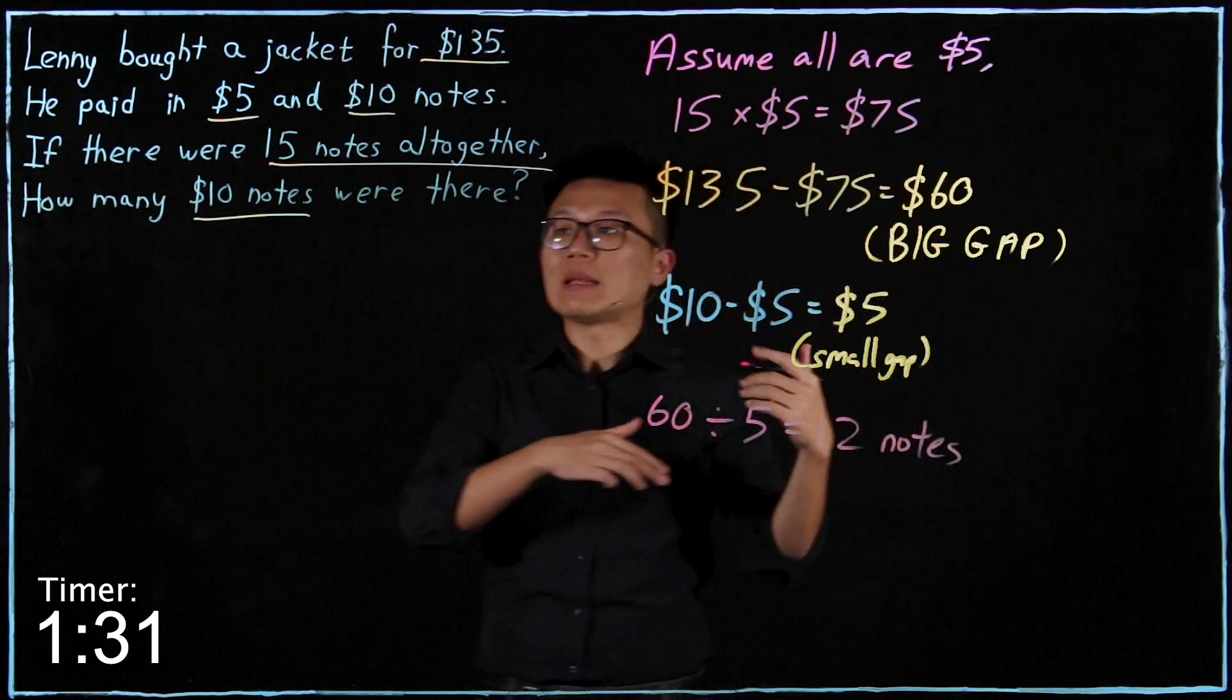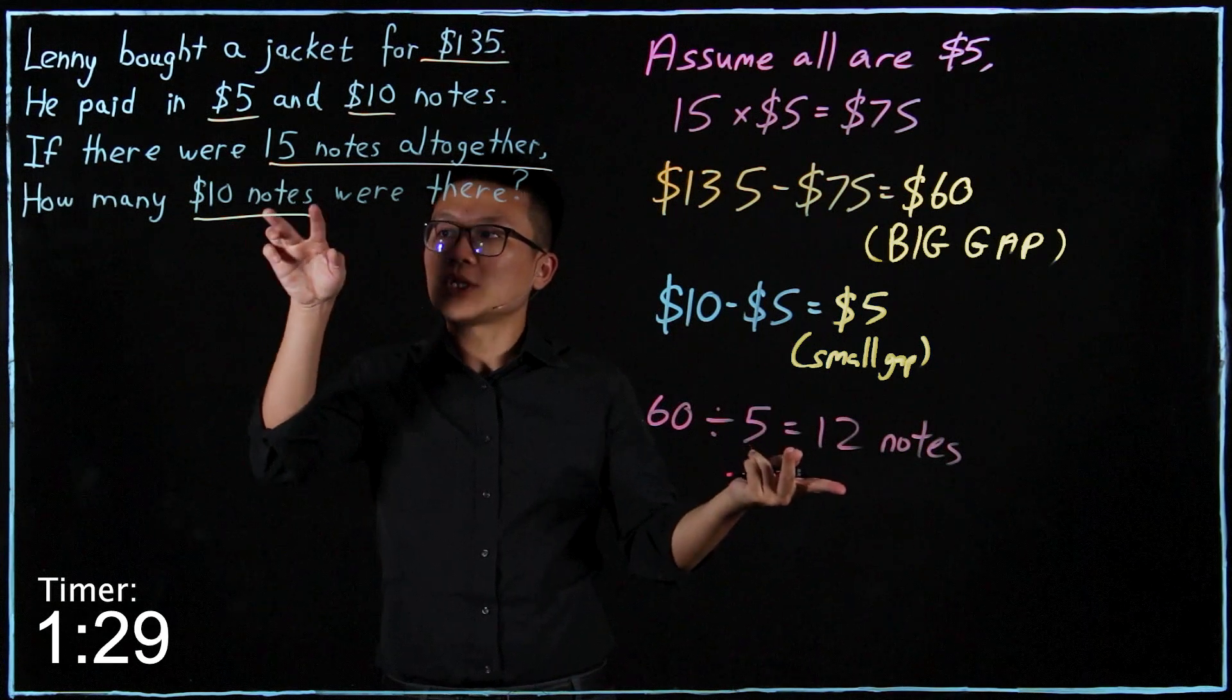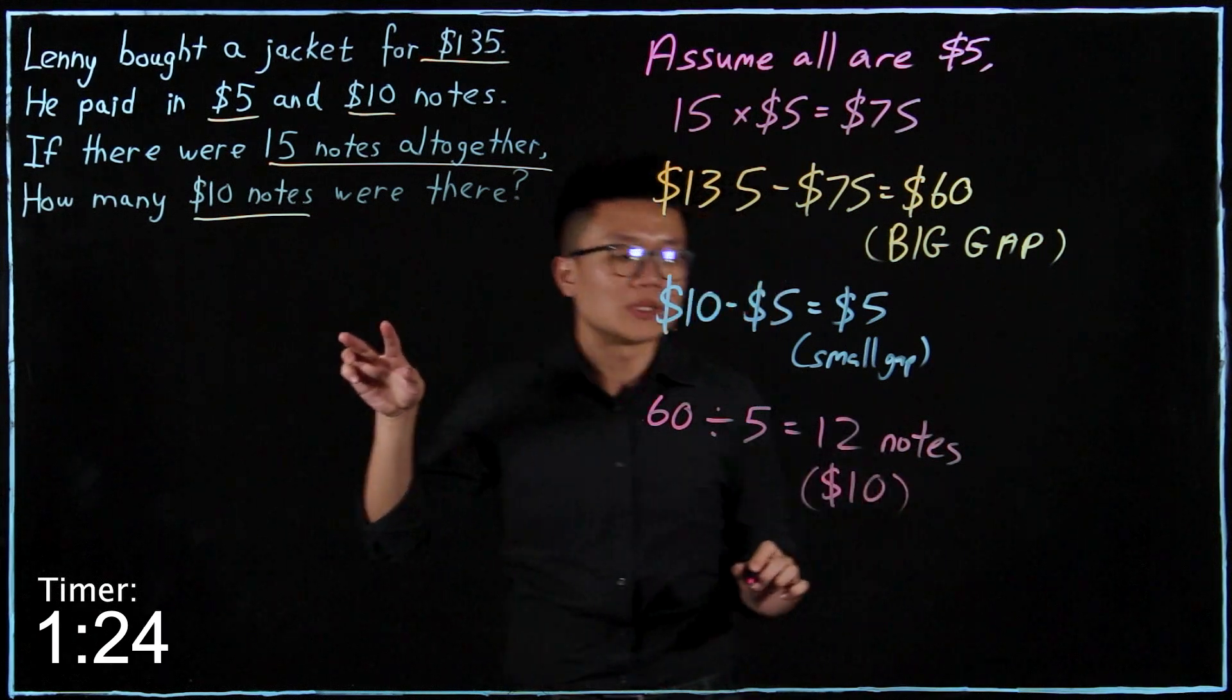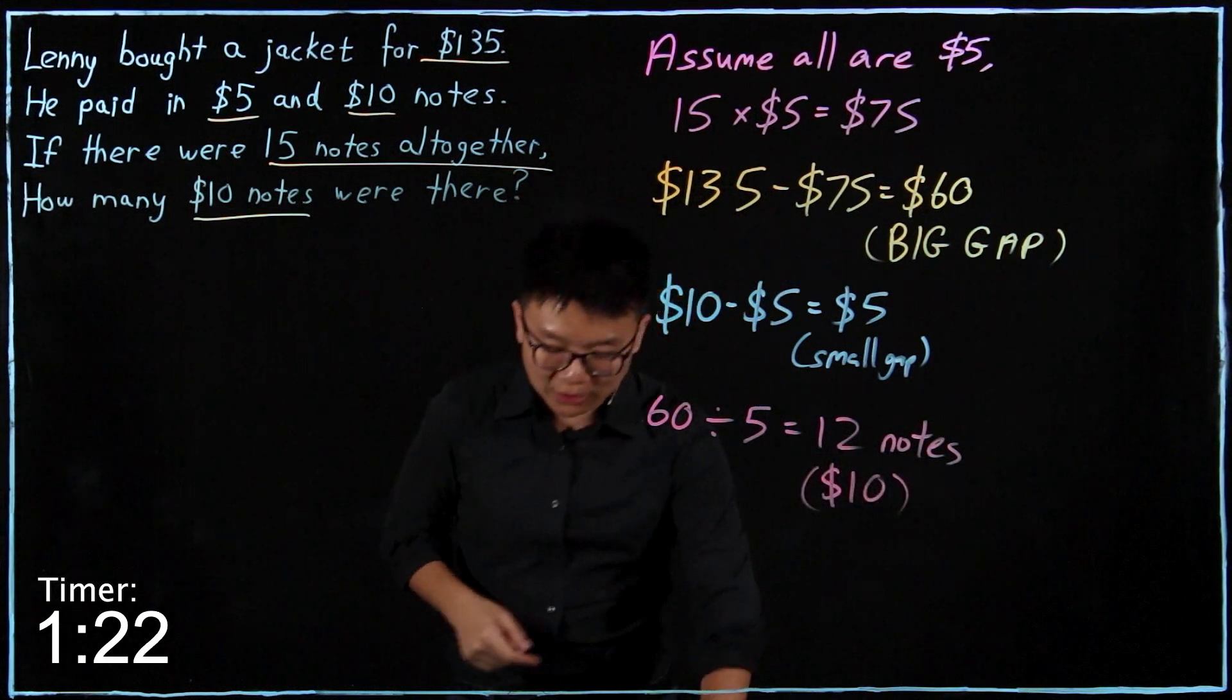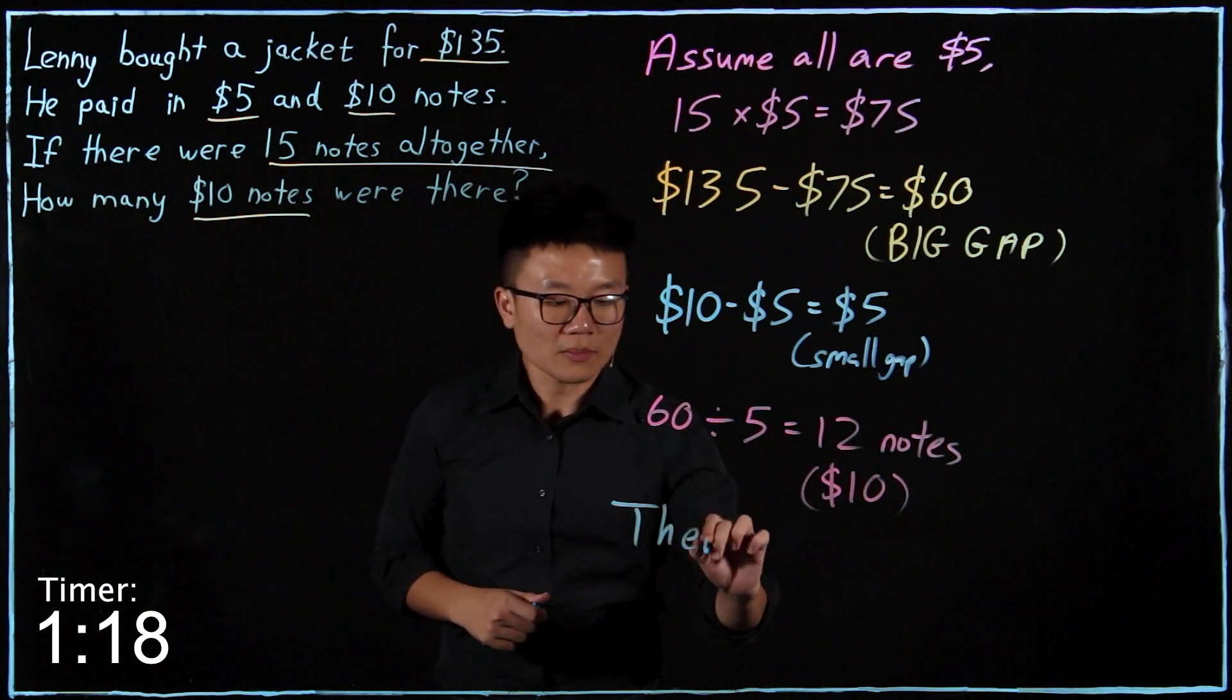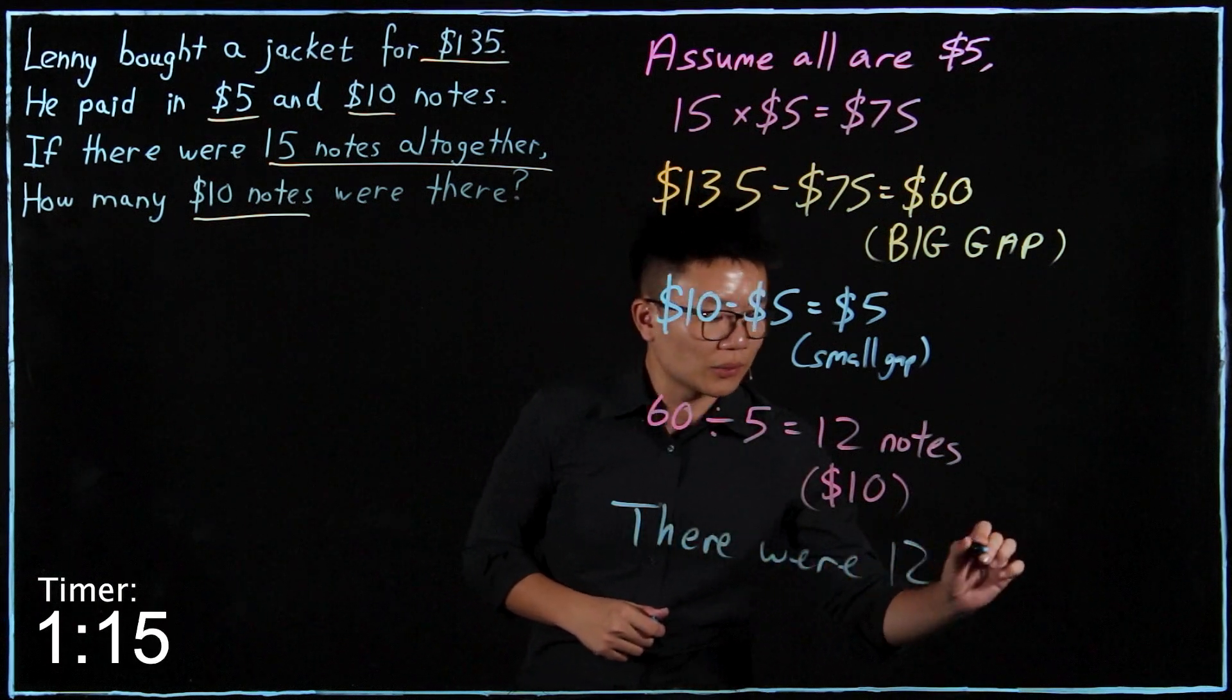And since the answer will lead me to the opposite outcome, which is 12, so this is 12 $10 notes. Oh, I've got the answer. So there were 12 $10 notes.